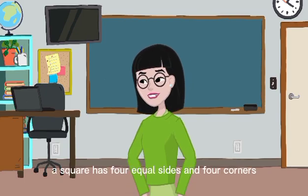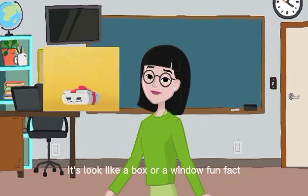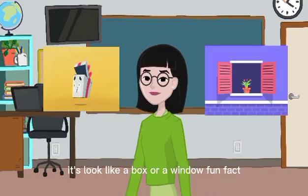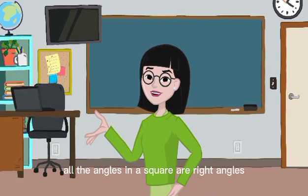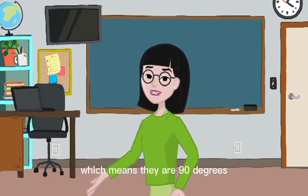A square has four equal sides and four corners. It looks like a box or a window. Fun fact! All the angles in a square are right angles, which means they are 90 degrees.